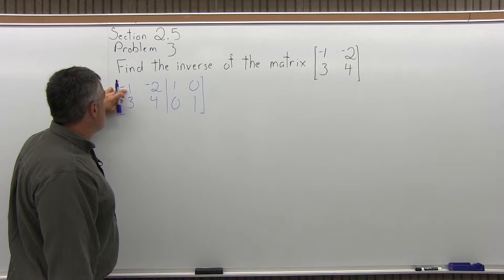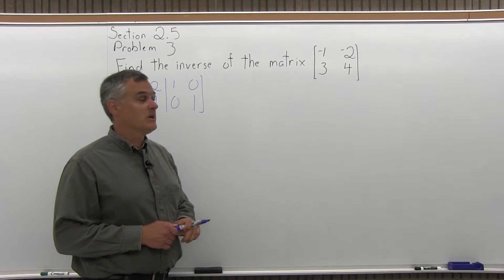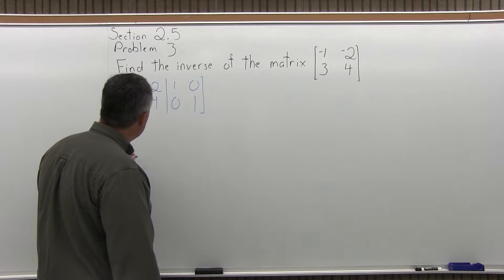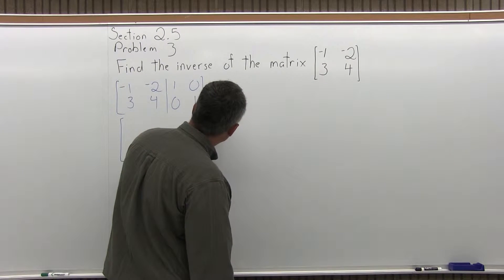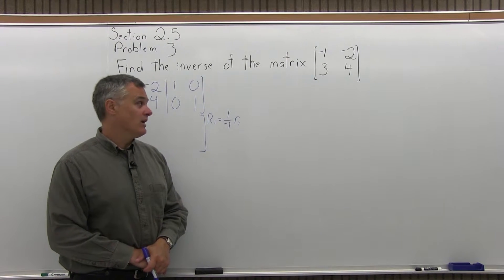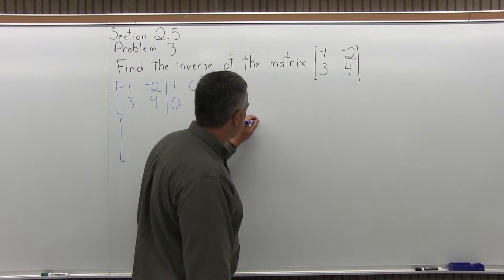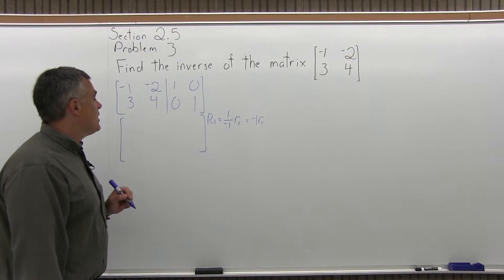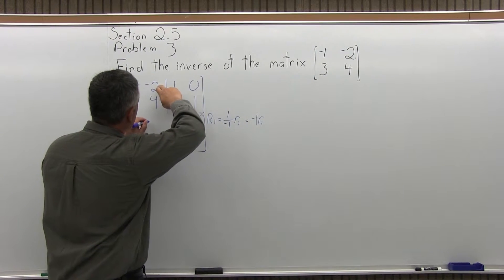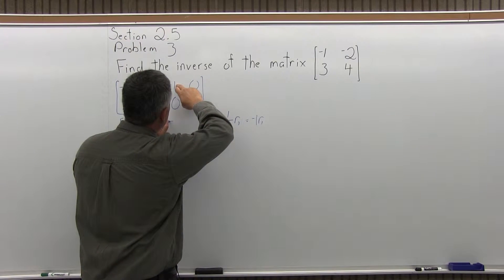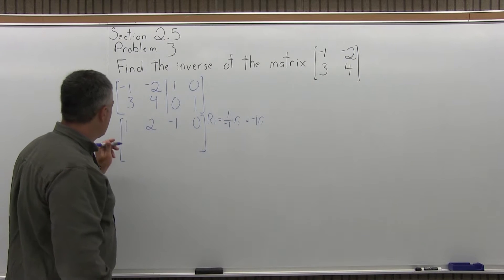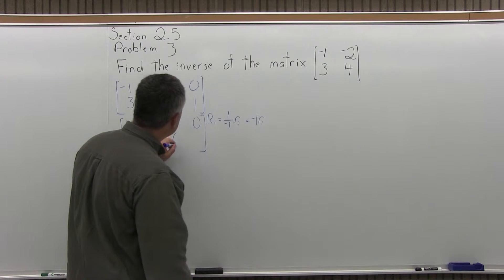The value in the upper leftmost position must be a 1. Right now it's negative 1, so to make it a 1, I'm going to multiply the whole top row times 1 over negative 1, which simplifies to negative 1 times row 1. So: negative 1 times negative 1 is positive 1; negative 1 times negative 2 is positive 2; negative 1 times 1 is negative 1; negative 1 times 0 is 0. New top row: 1, 2, negative 1, 0. The bottom row stays as 3, 4, 0, 1.